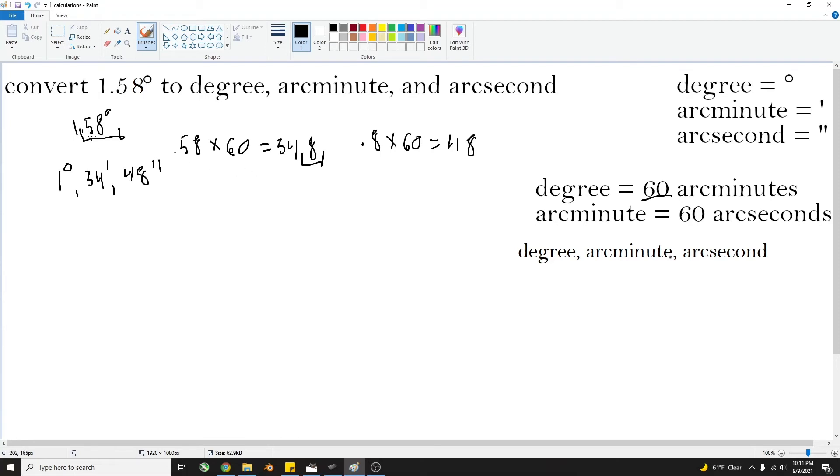So you can do that by taking 0.58 times 60, and that'll give you 34, which will be the amount of arc minutes. We still need to get rid of this decimal point so that we can get the arc seconds. So if you take 0.8 and multiply that by 60, you'll get 48, which is how many arc seconds there are.